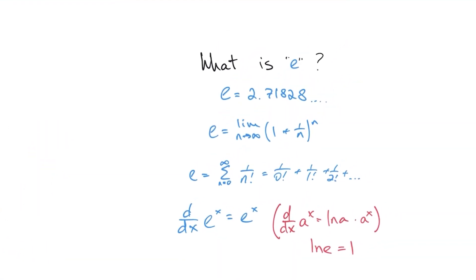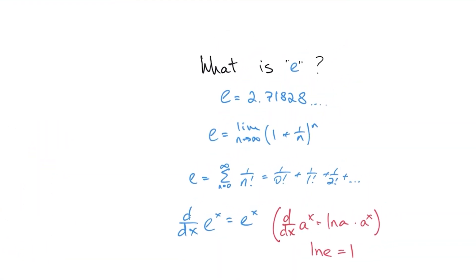Now let's look at what e really is. It's an infinite, non-repeating number, just like pi. It starts with 2.71828 and so on. But there's also very many other definitions. Some of the most popular ones are right here. It can be represented as an infinite limit as n goes to infinity, and it can also be presented as an infinite sum of factorials.